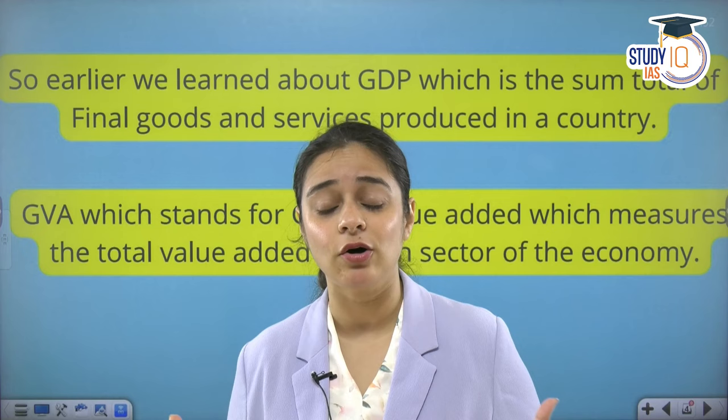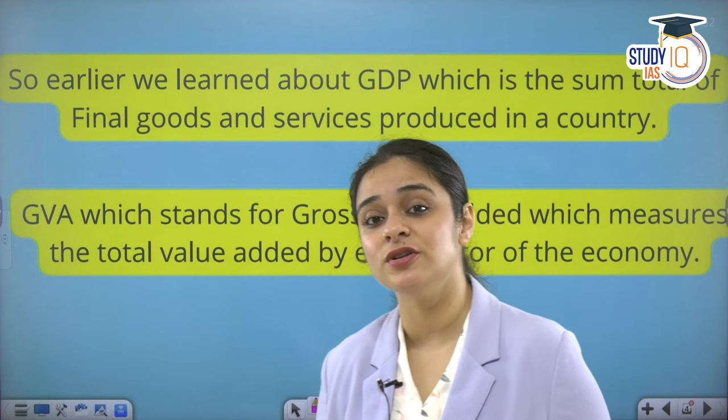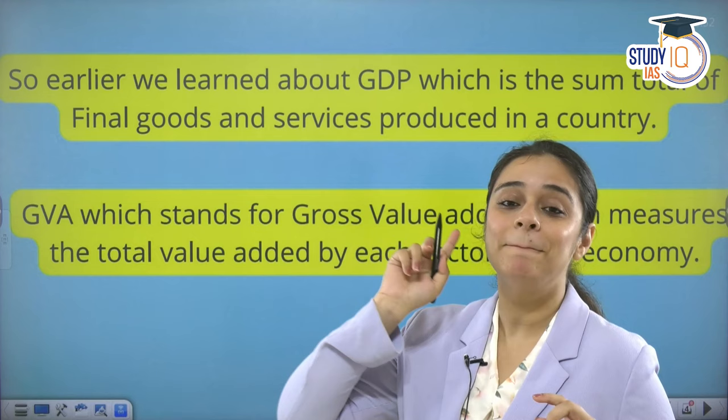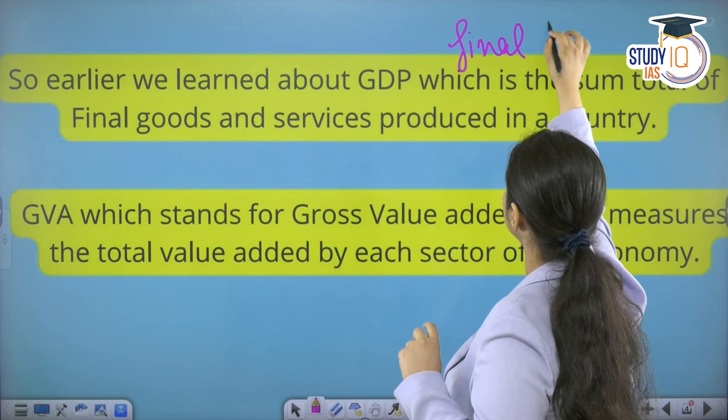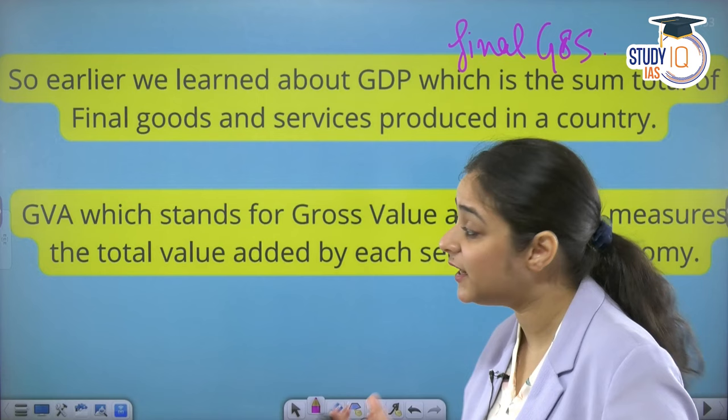First of all, let's recap about GDP. GDP is the monetary value of the final goods and services produced in an economy. Remember, it is the final goods and services — not intermediate goods.